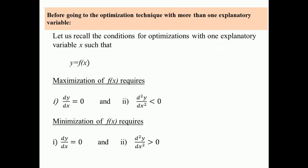Before going to the optimization technique with more than one explanatory variable, let us recall the conditions of optimization of the objective function with one explanatory variable only. For a function y = f(x), the necessary condition of maximization is dy/dx = 0, and the sufficient condition is the second-order differentiation of y with respect to x must be less than 0.